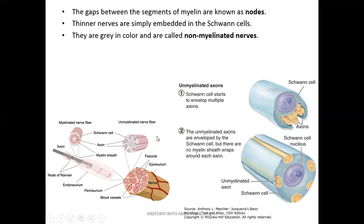There are two types of nerve fibers: myelinated and non-myelinated. In myelinated fibers, Schwann cells encircle the nerve fiber multiple times. In non-myelinated fibers, Schwann cells come close to the axons and cover them but do not encircle multiple times. In both types, Schwann cells are associated with the fibers, but in myelinated fibers, a single Schwann cell surrounds a single axon multiple times.